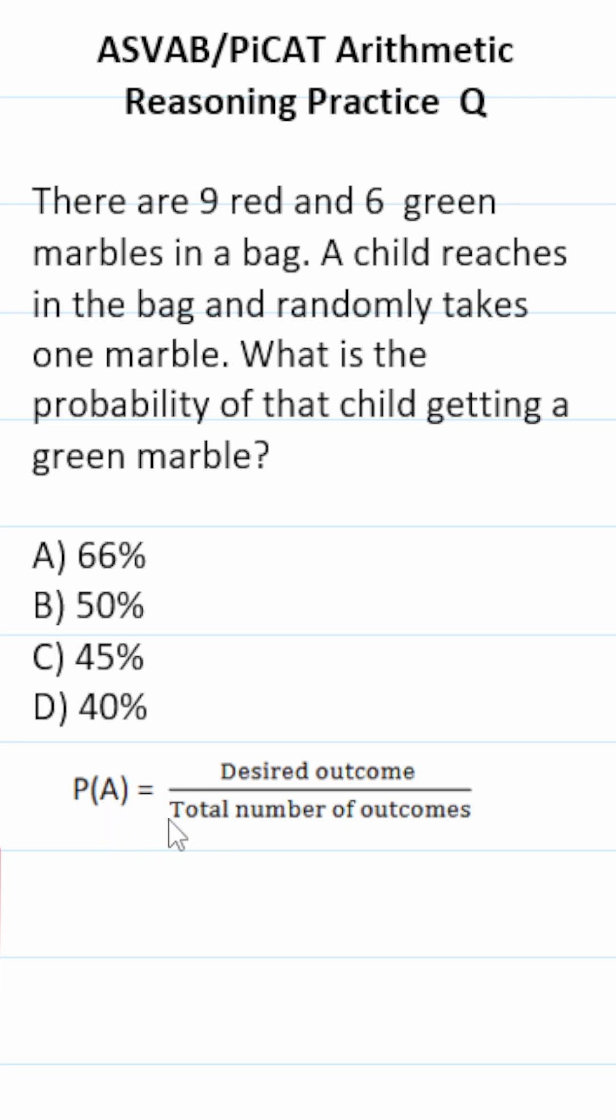For this one, you have to understand some basic probability. The probability of that child selecting a green marble is going to be equal to the desired outcome, the green marble. There are six of those in the bag divided by the total number of possible outcomes.